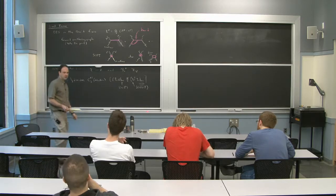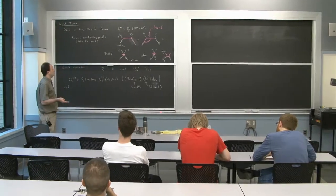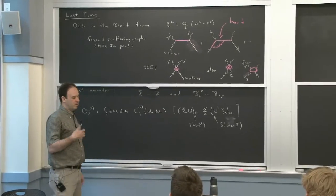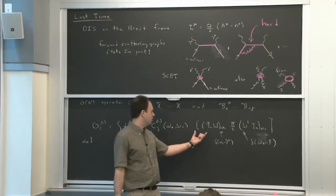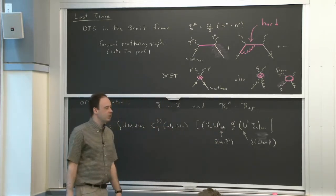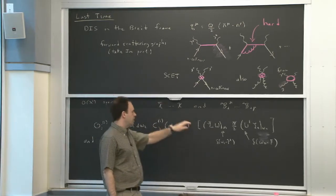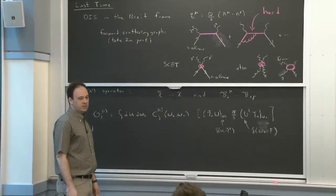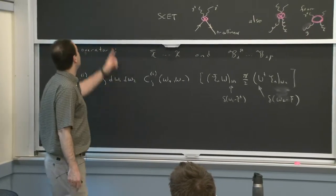Let me remind you what we were talking about last time. We were discussing the example of DIS in the Breit frame. We led into this example by talking about renormalization group evolution of the heavy-light current, which had a cusp anomalous dimension and multiplicative renormalization group evolution. That happened because we only had one collinear gauge invariant object in our operator. Then I wrote down an operator that has two, and running that object gives a renormalization group equation involving convolutions — the renormalization group evolution of the parton distribution function.